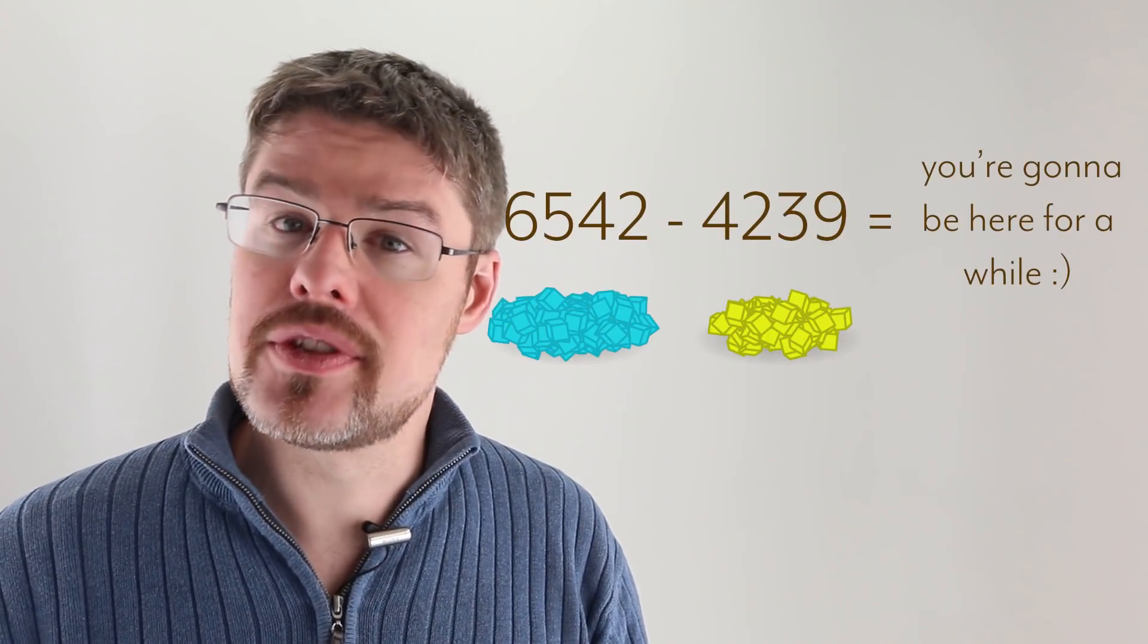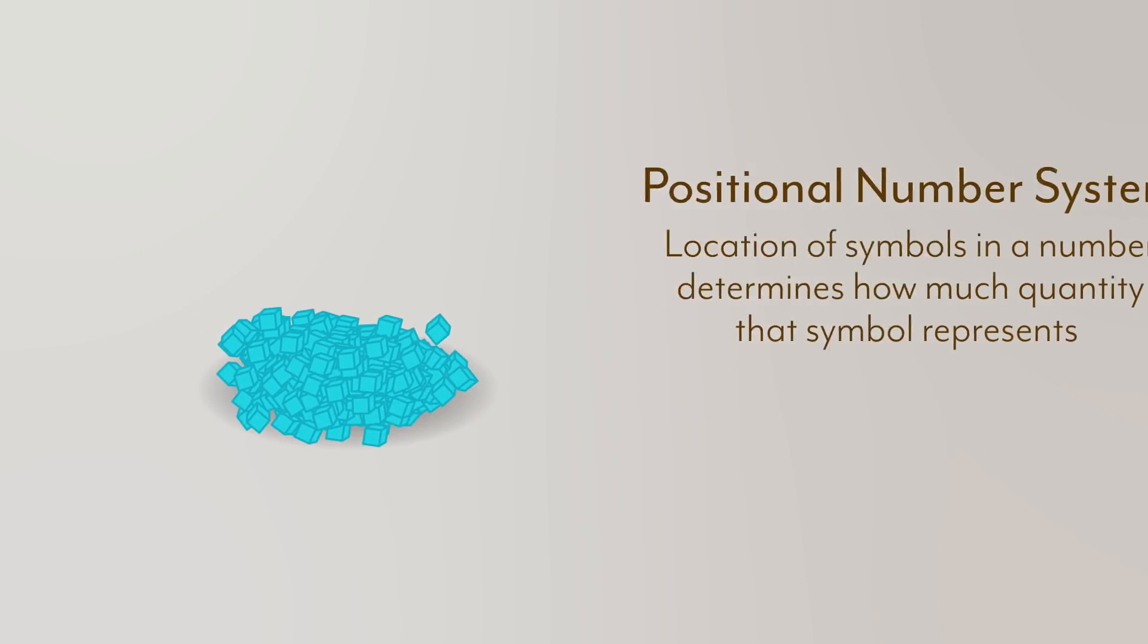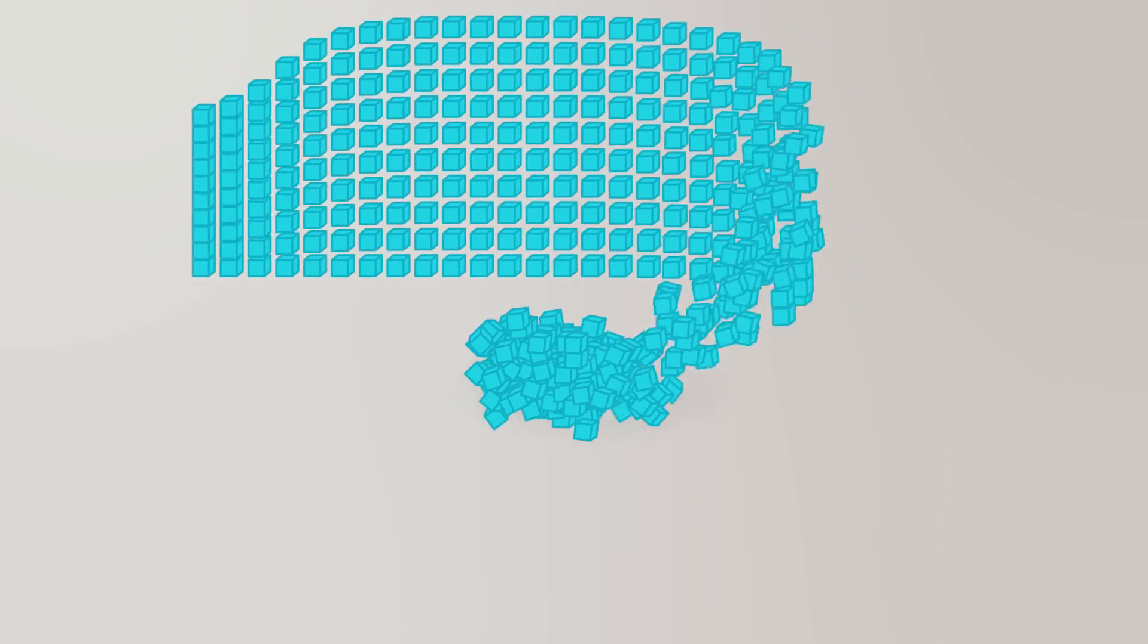We're going to need to come up with some way of organizing so that we can get our heads around this. Thankfully, we have a way of doing that with our positional number system. Instead of having one giant pile of stuff, let's chunk these things together into piles of 10, which we'll call tens.